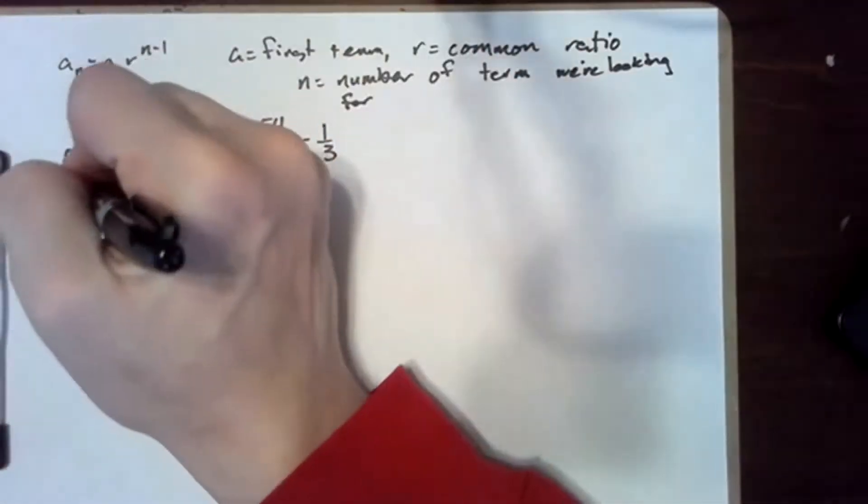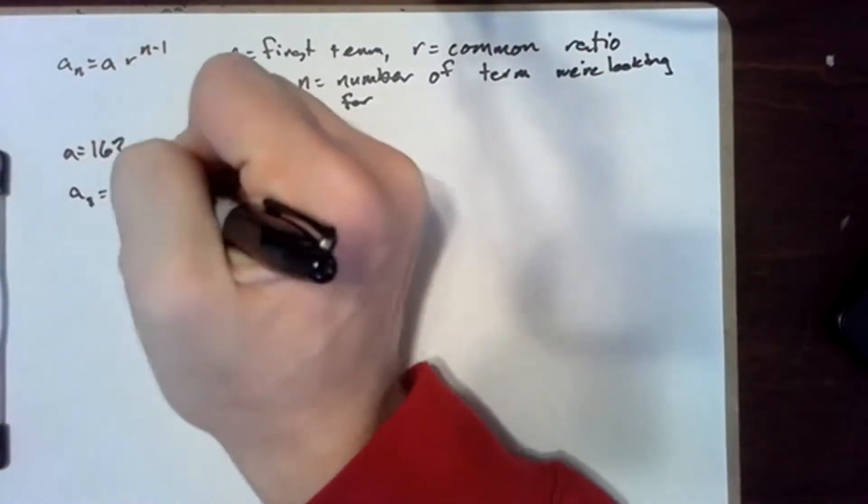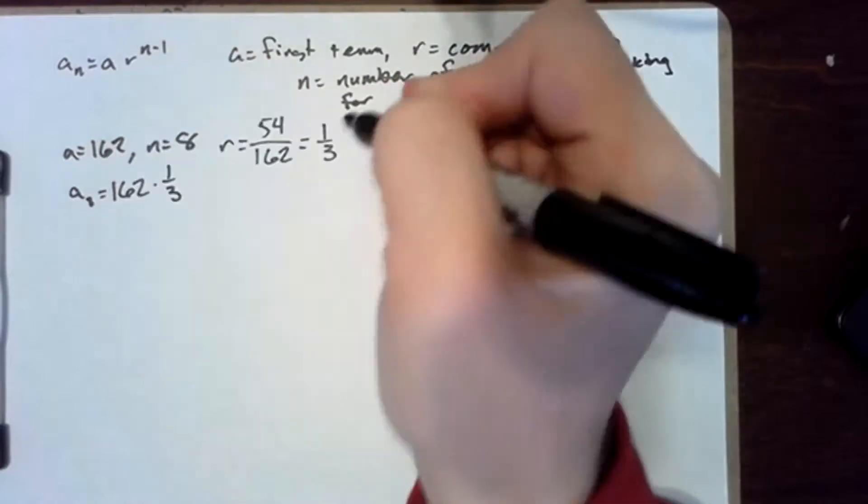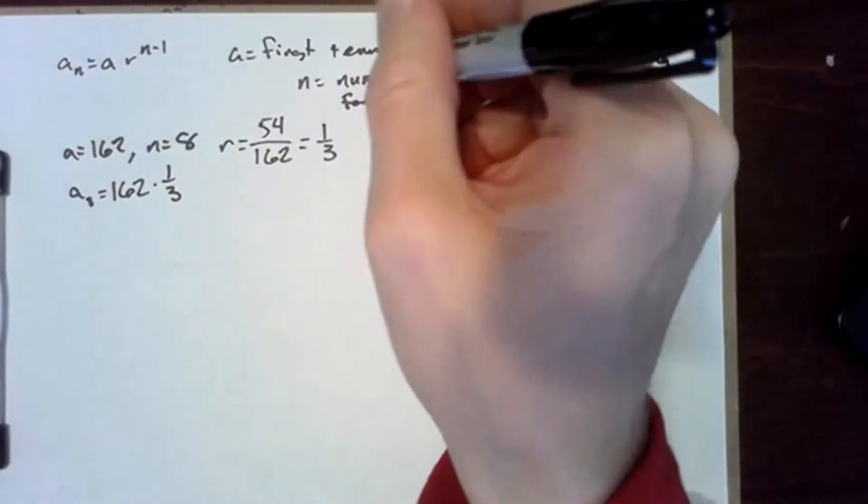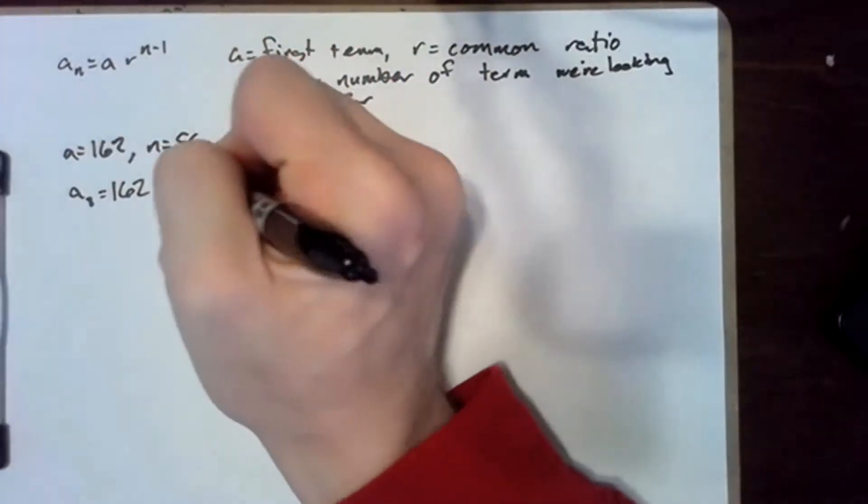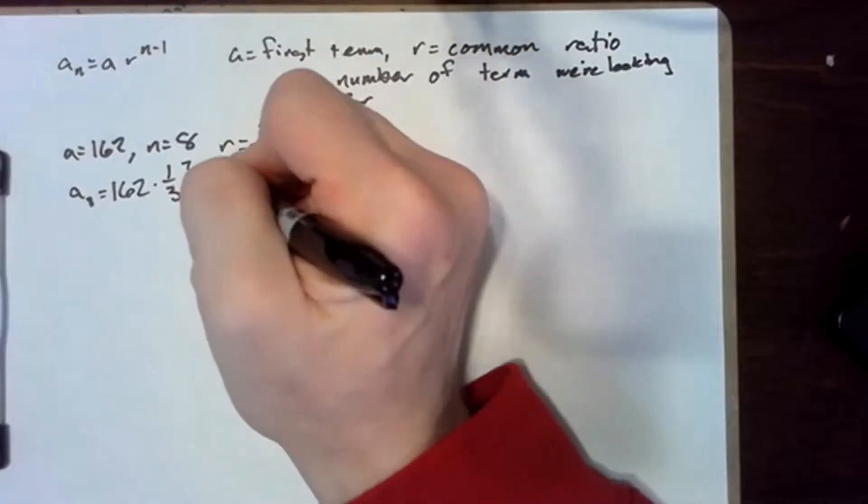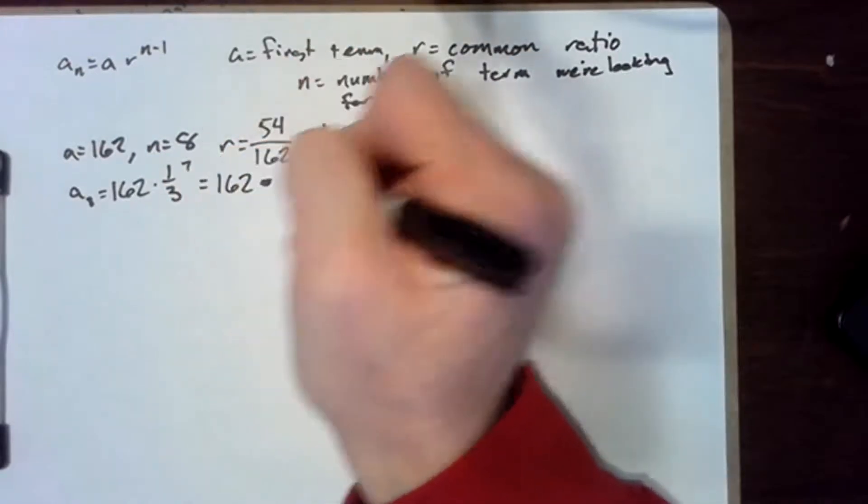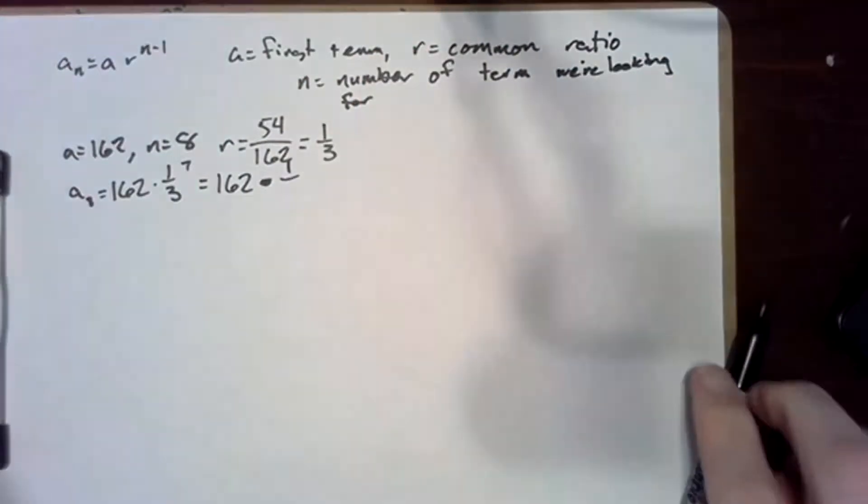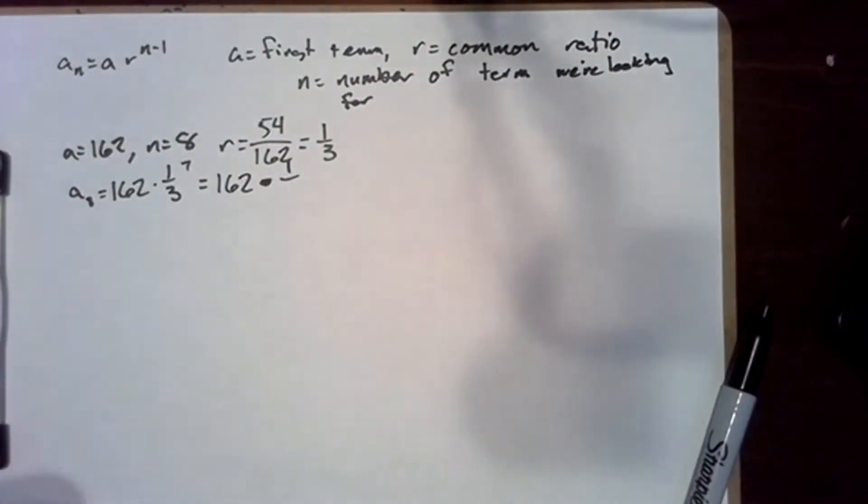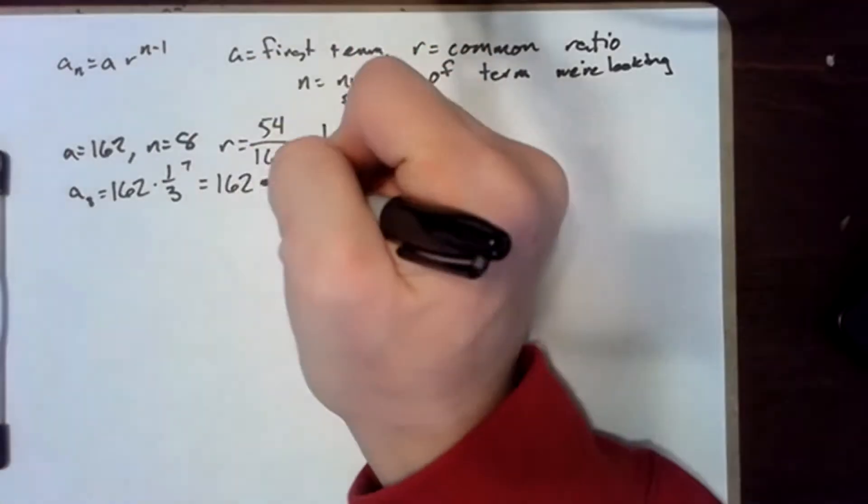So a sub 8 will be 162 times one third to the seventh power. That is going to be 162 times one over—I don't know what three to the seventh power is off the top of my head, but I can figure it out pretty quickly. 3 raised to the seventh power is 2,187.